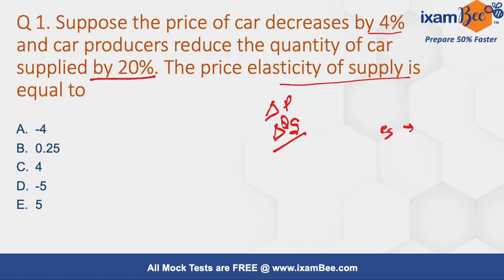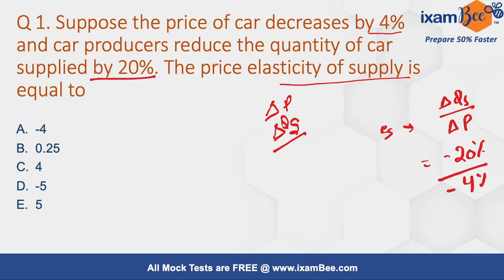So how should we find it? The price elasticity of supply will be equal to change in the quantity supplied divided by change in the price. Here the quantity supplied is decreased by 20 percent and the price is decreased by 4 percent. Therefore the price elasticity of supply is 5.